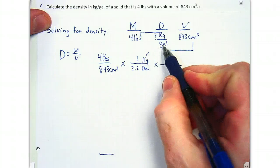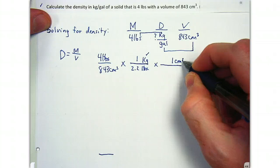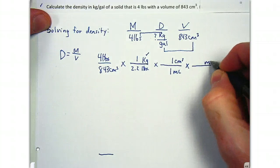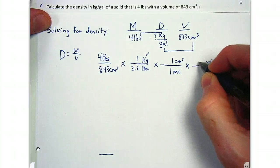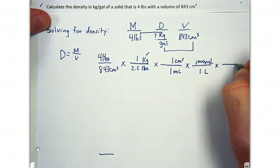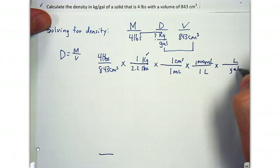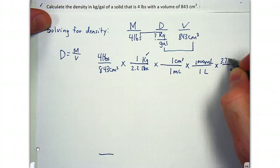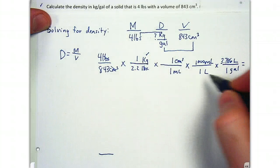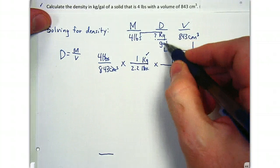Now we need to convert cubic centimeters to gallons. One cubic centimeter equals one milliliter. We bring up milliliters, and 1,000 milliliters equals one liter. Then from liters to gallons: there are 3.786 liters in one gallon. Cubic centimeters cancel, milliliters cancel, liters cancel.